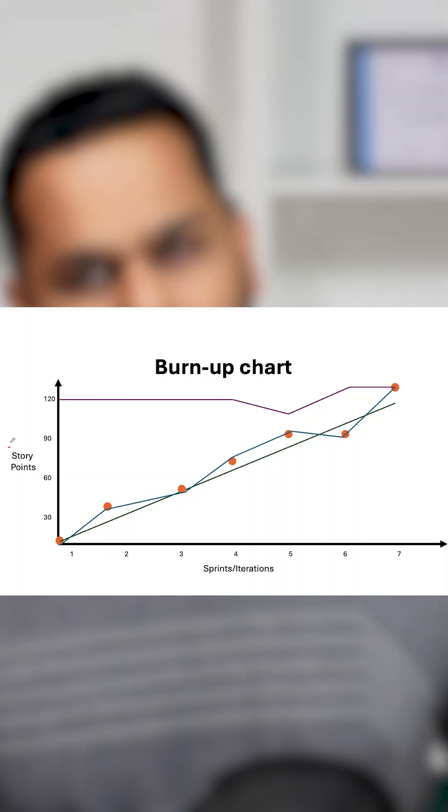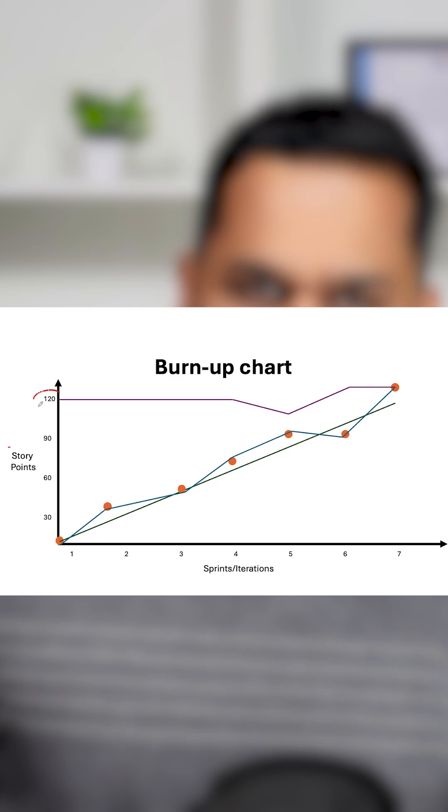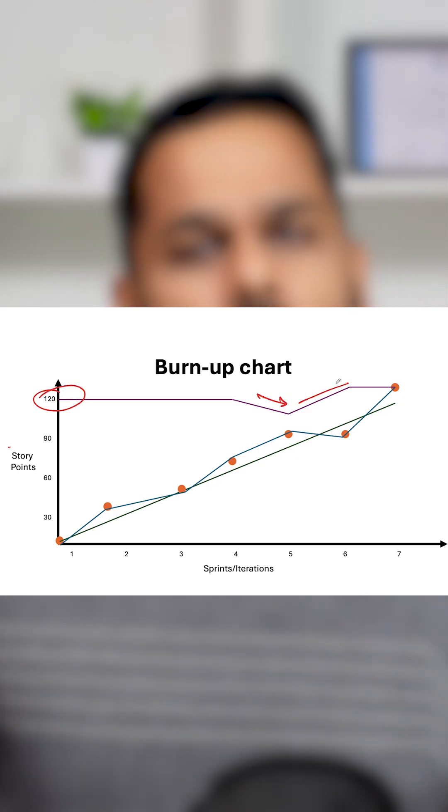Additionally, what we see in a burn-up chart is a scope variation chart as well. Sometimes, towards a release, we may see some variation in user stories — some addition of user stories, some deletion of user stories. So my scope, the total 120 story points that I am supposed to complete, might go down or up depending on the scope changes. The burn-up chart helps us reflect that as well, which we don't see in a burn-down chart.